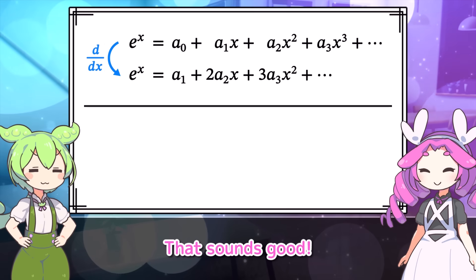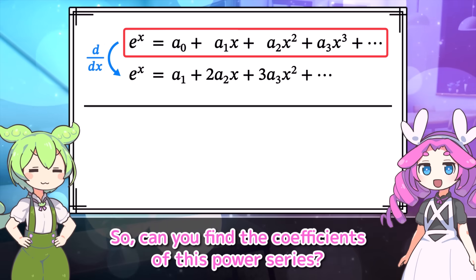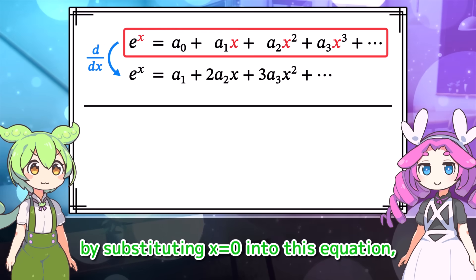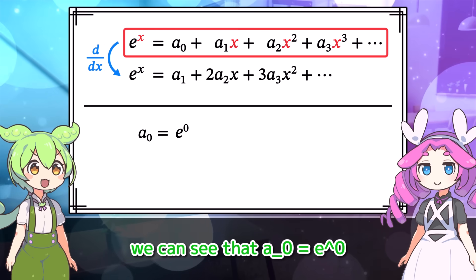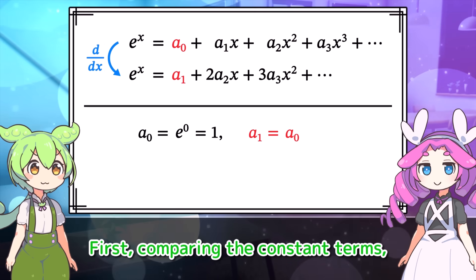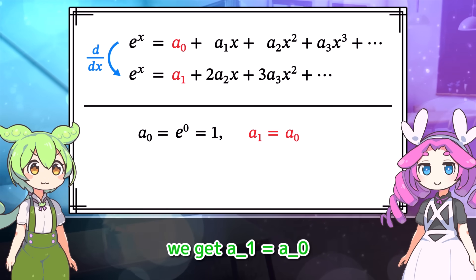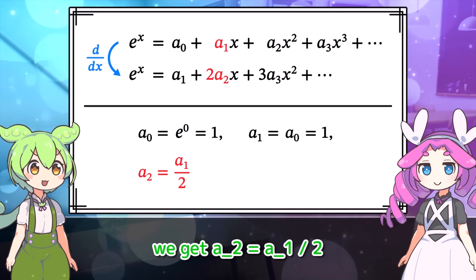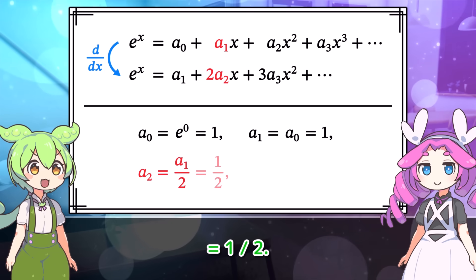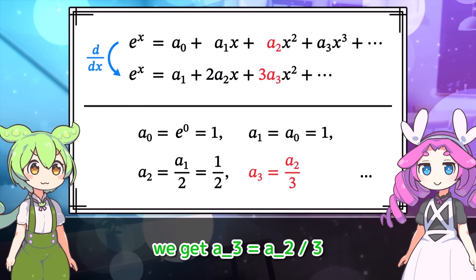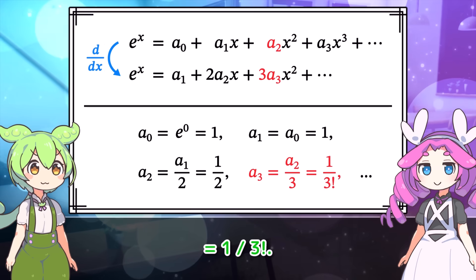So can you find the coefficients of this power series? By substituting X equals 0 into this equation, we can see that A sub 0 equals E to the 0 equals 1. Then we can compare the coefficients of the two expressions. Comparing the constant terms, we get A sub 1 equals A sub 0 equals 1. Next, comparing the linear terms, we get A sub 2 equals A sub 1 over 2 equals one half. Comparing the quadratic terms, we get A sub 3 equals A sub 2 over 3 equals 1 over 3 factorial.